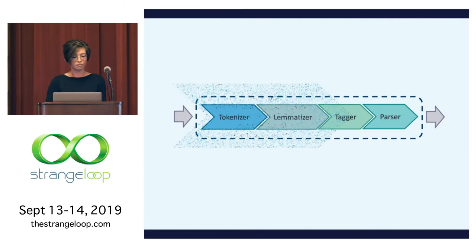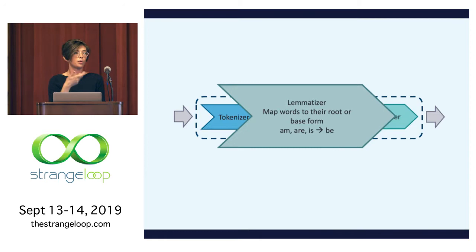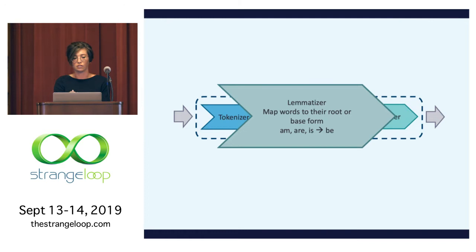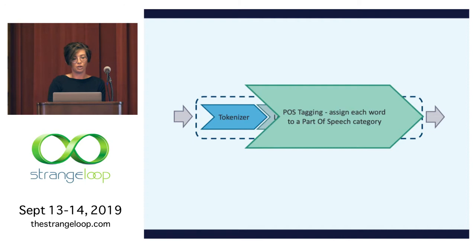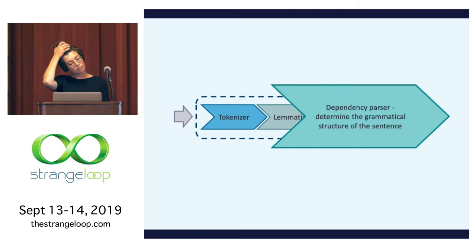Next, we use a lemmatizer, which simply maps words to their root or base form. So if you have a conjugated verb, what really matters is not what the token itself looks like but what the semantic reference is — they all map back to the base form. After that, we do parts-of-speech tagging, assigning each word to a part-of-speech category such as verbs, nouns, and adjectives. The last step we're interested in is the dependency parser, which determines the grammatical structure of the sentence. It builds a tree of dependencies, identifying head words and then the words that modify them.